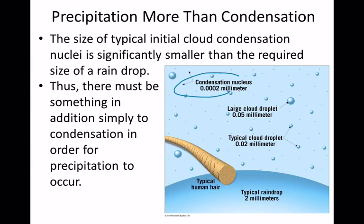Those two little things right there — that's what you get when you first begin a cloud droplet. It's really small. Now, in order for cloud droplets to fall from the cloud, they have to get big enough, because it's a gravity thing. If they're so small, they're too small to fall from the cloud. So we need to get something that small to go ahead and get bigger.